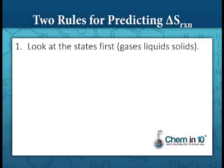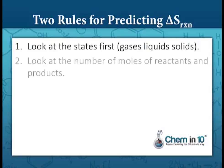There are two rules that we use for predicting the delta S — the entropy change in a reaction. First, we look at the states, whether we're talking about gases, liquids, or solids. And then we look at the number of moles of reactants and products.